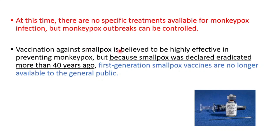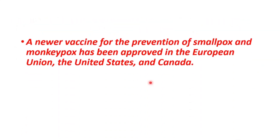Vaccination against smallpox is believed to be highly effective in preventing monkeypox, but because smallpox was declared eradicated more than 40 years ago, first-generation smallpox vaccines are no longer available to the general public. However, a newer vaccine for the prevention of both smallpox and monkeypox has been approved in the EU, United States, and Canada.